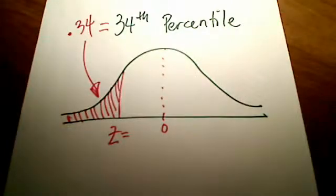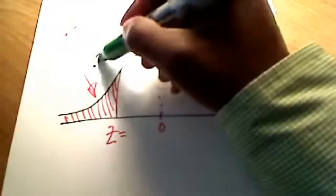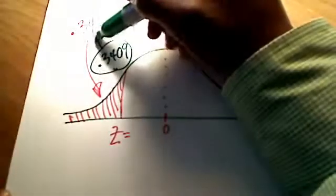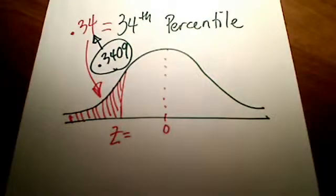The closest thing I'm getting is .3409. I hope you can see that on your table if you're using the Triola book. So .3409, that is the probability area that comes closest to, that is the closest thing I can find to .34.